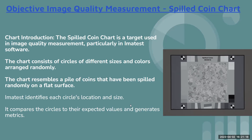The first chart is the spill coin chart. The spill coin chart is used to measure texture — how much texture a camera can produce can be measured using it. This chart has circles of different sizes and colors arranged randomly. It looks like a coin that is spilled, so it's called the spill coin chart.